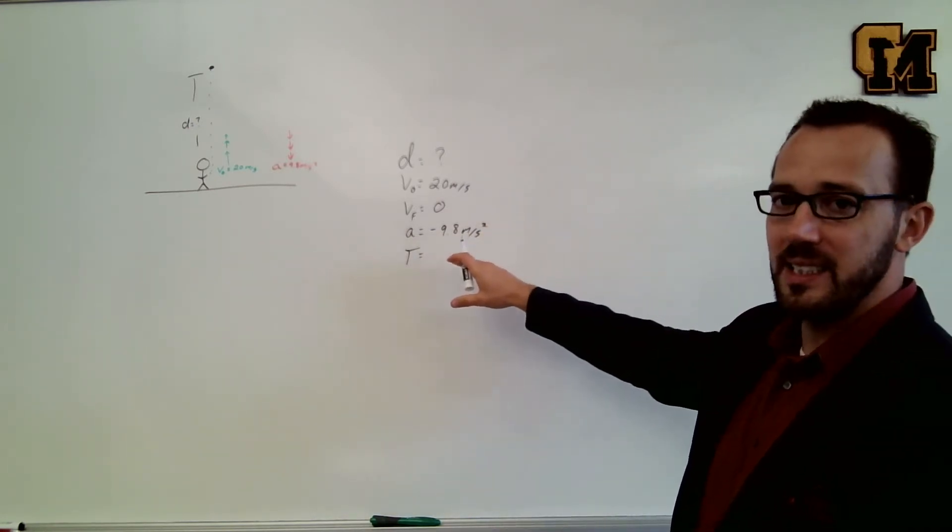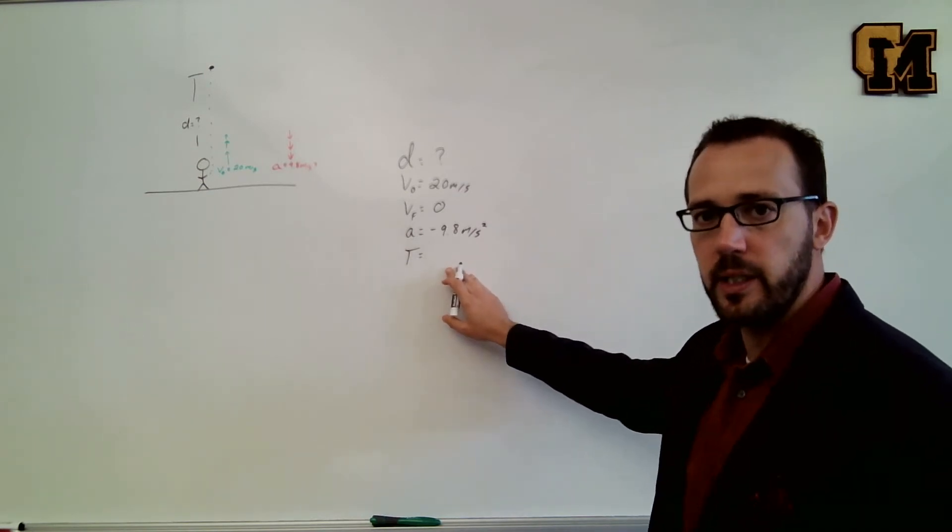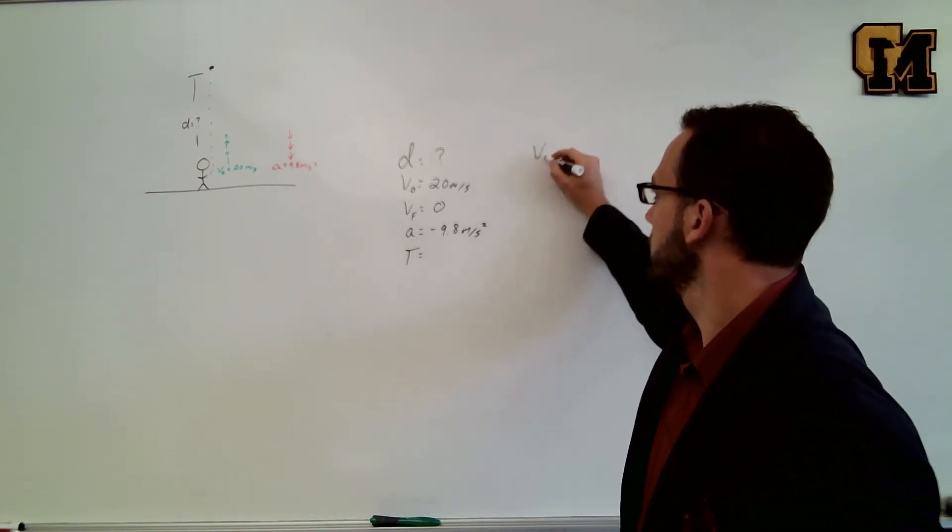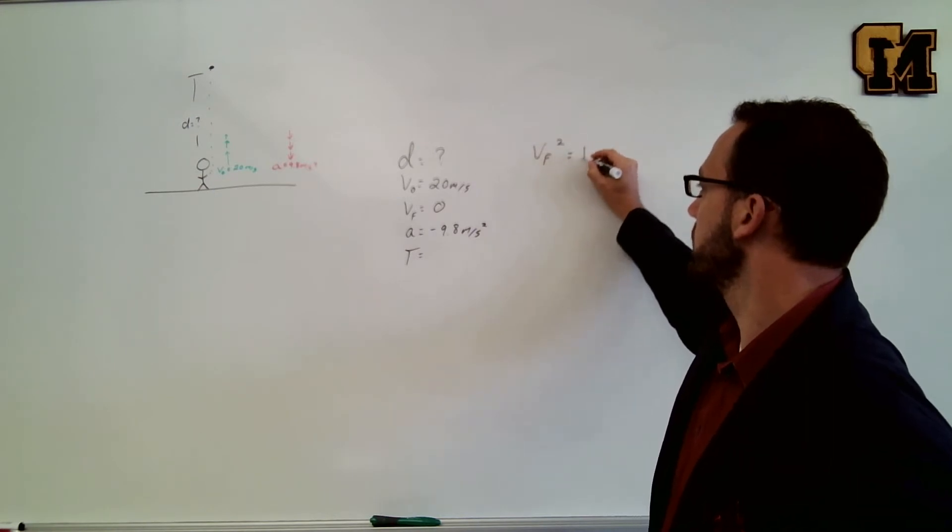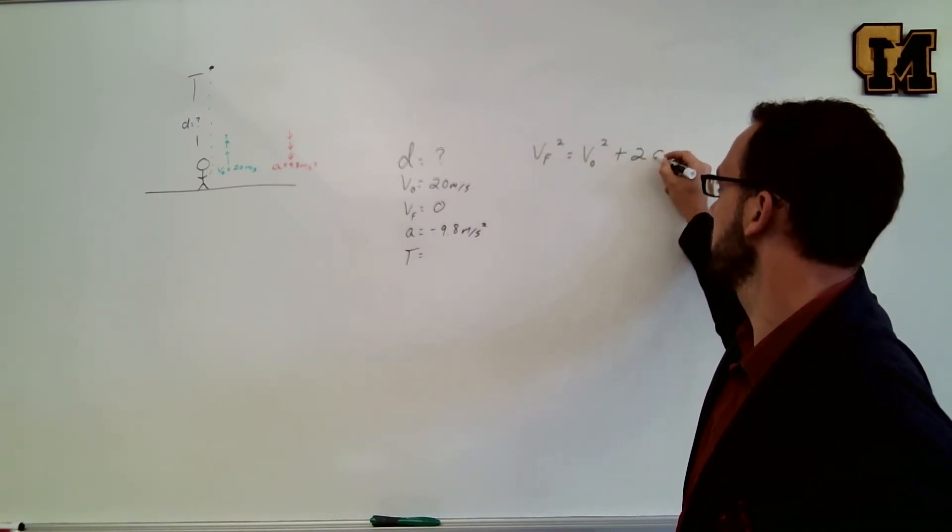We're going to pick the equation that does not have time in it because that's the thing that we don't have and don't care about. So that would be VF squared equals V naught squared plus 2AD.